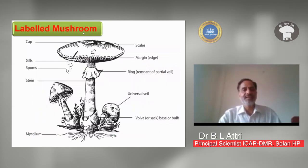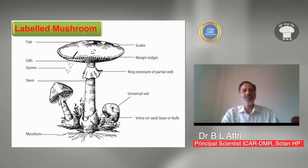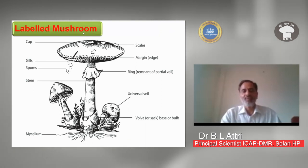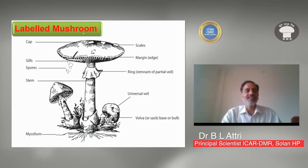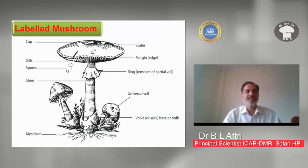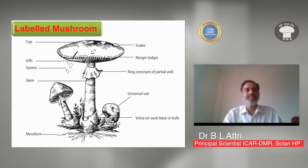Here you can see the typical mushroom body: mycelium forms first, then basidia produce spores, and finally the cap forms on top. Underneath the cap there are gills which contain small spores from which the mushroom is multiplied, because mushrooms do not have seeds. These spores are used for multiplication of mushrooms.